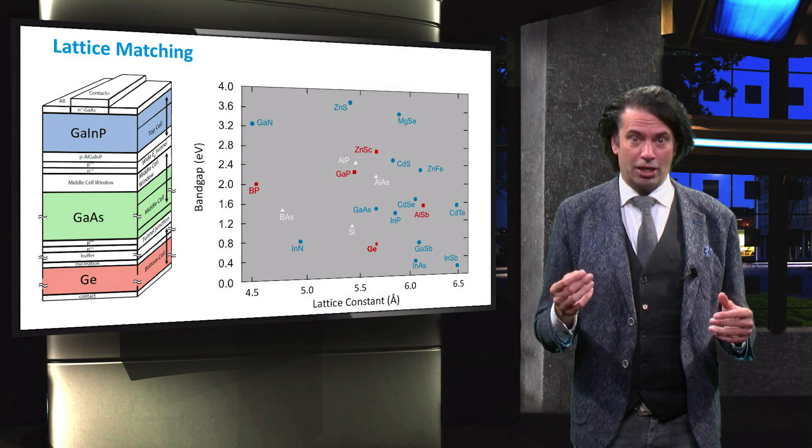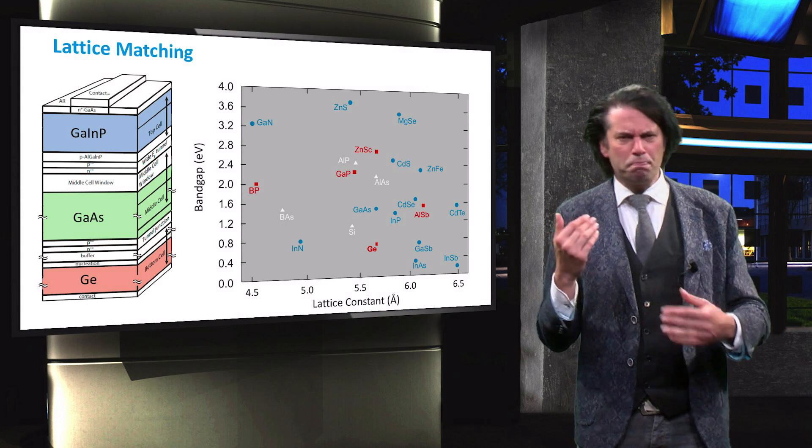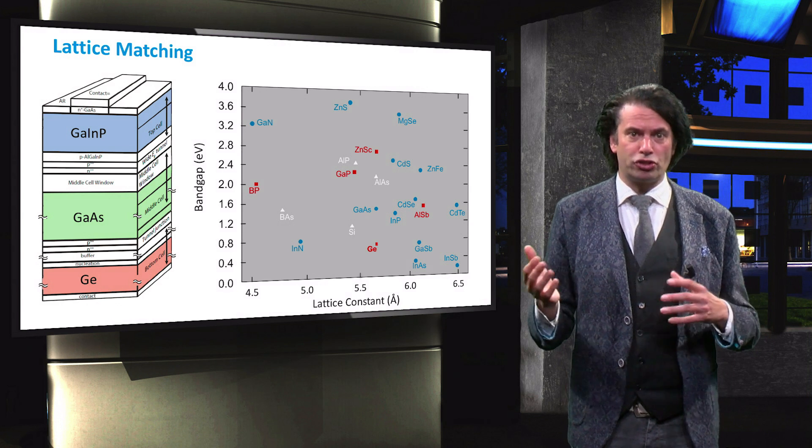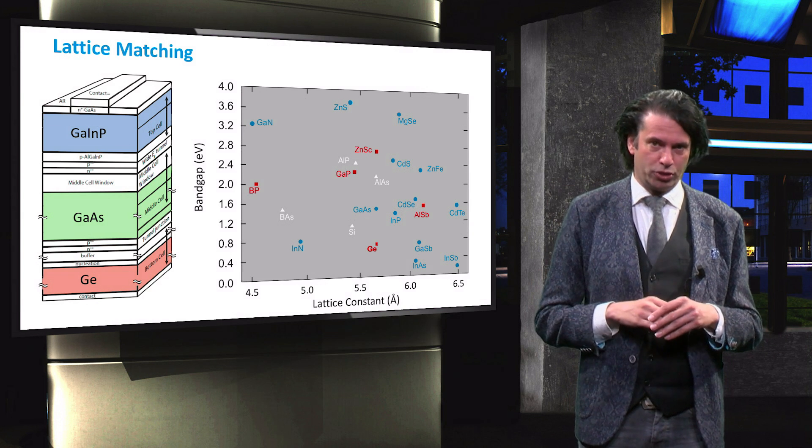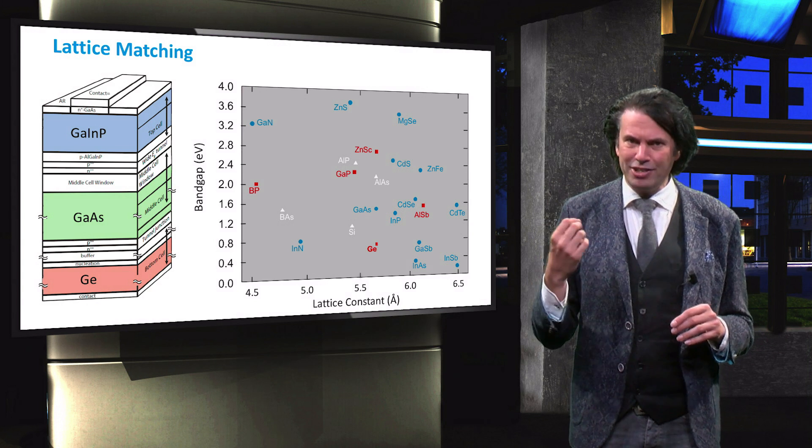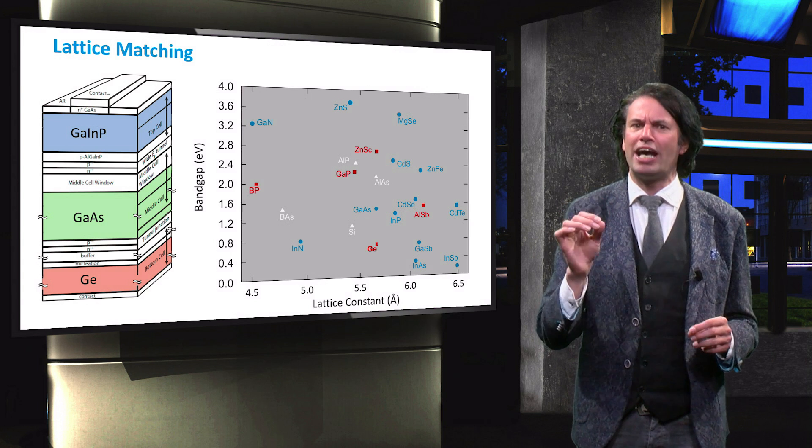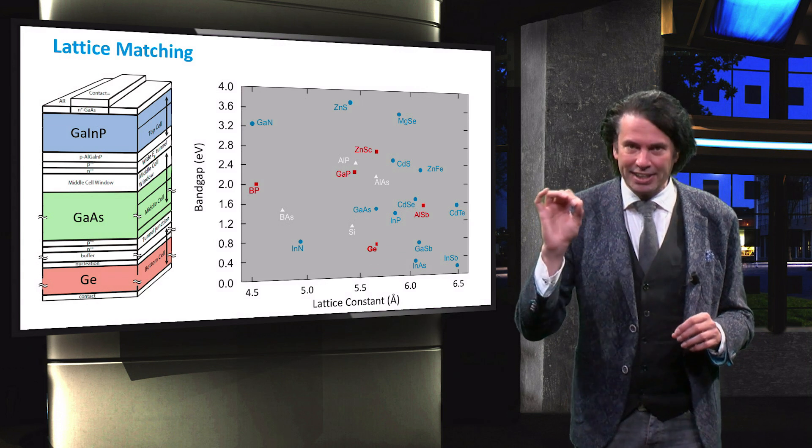We can decide, for example through simulation, what bandgap a cell in a multijunction device should have for optimal spectral utilization. We can then use the phase diagram to select a material with a matching lattice constant.